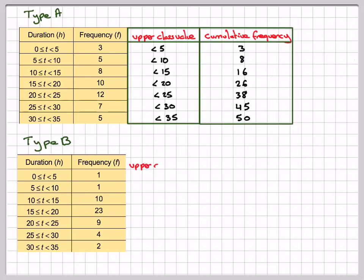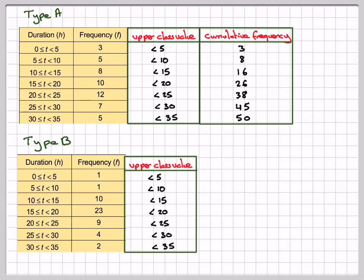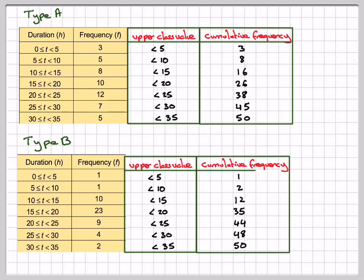Let's do type B the same way. So the same upper class values. For the cumulative frequency, the first one will be 1. The next one will be 1 plus 1, which is 2. The next one will be 2 plus 10, which is 12. 12 plus 23, which is 35. 35 plus 9, which is 44. 44 plus 4 is 48. And then 48 plus 2 is 50. So we've got our table.